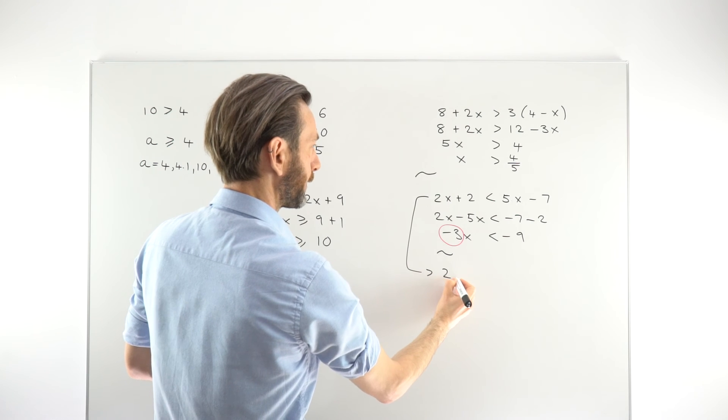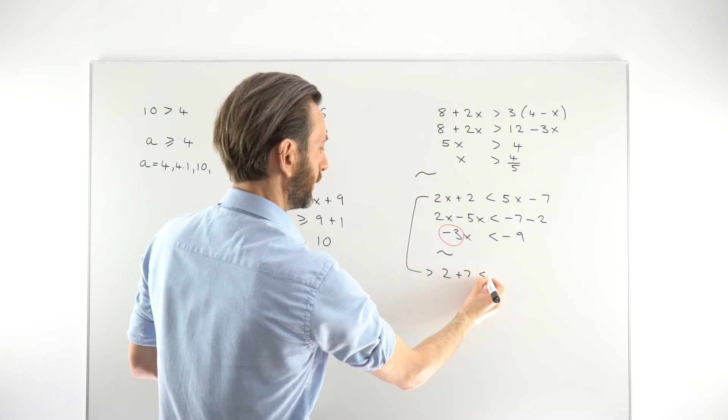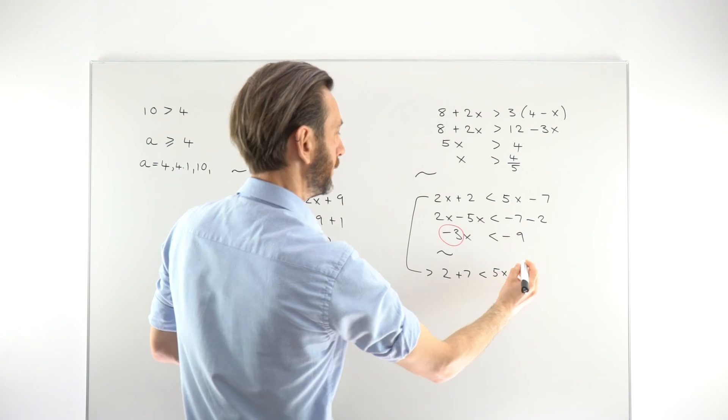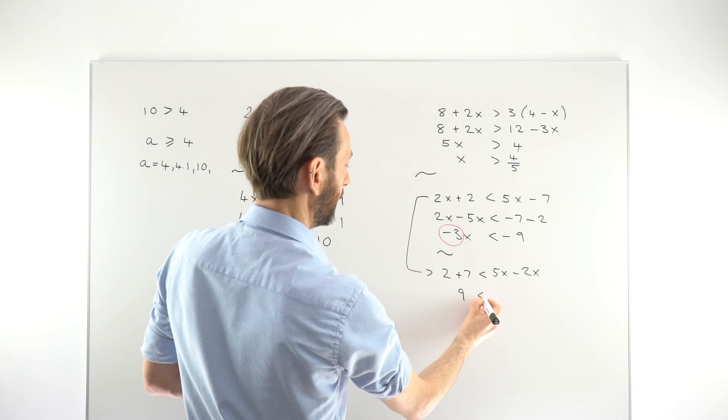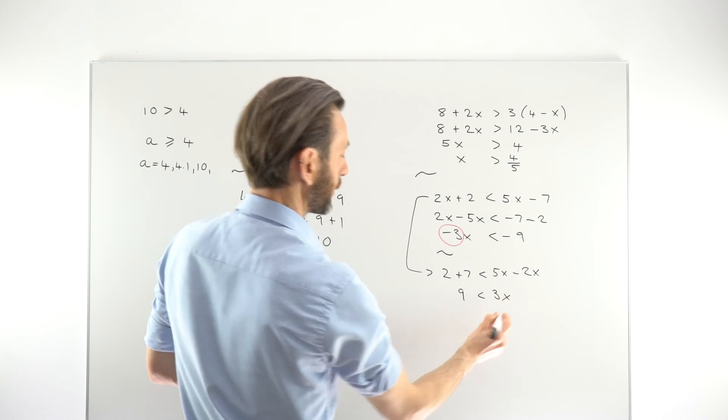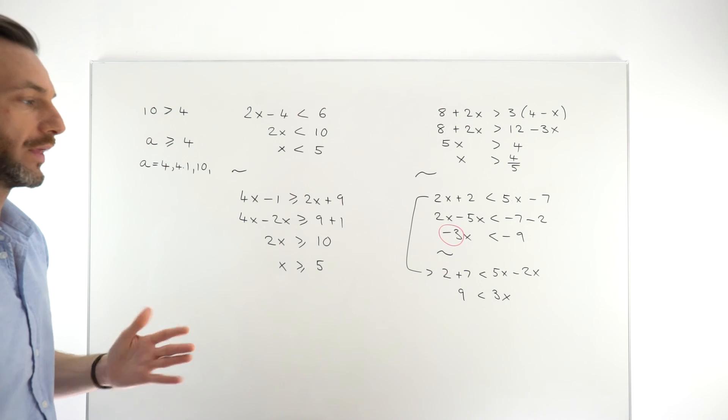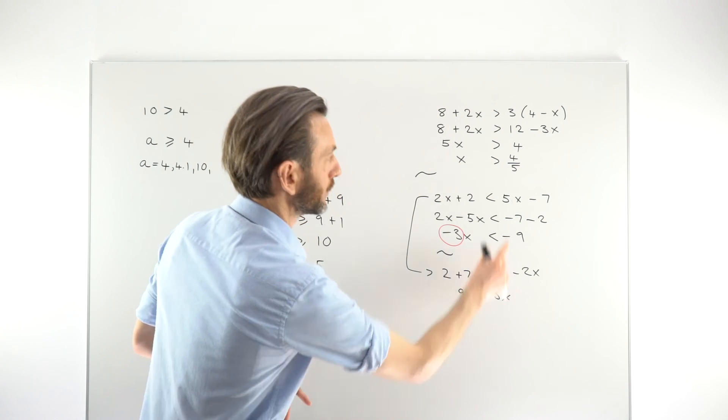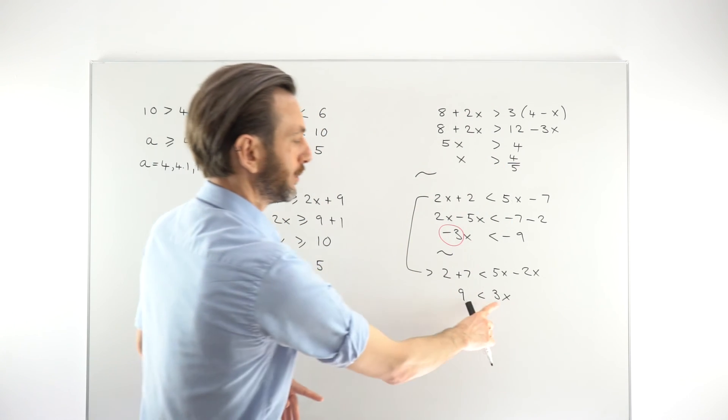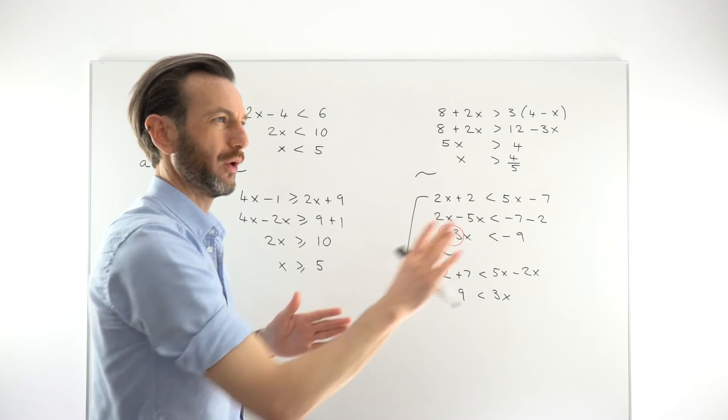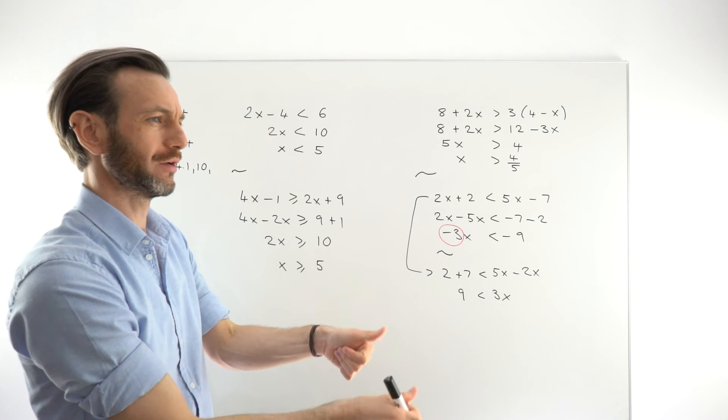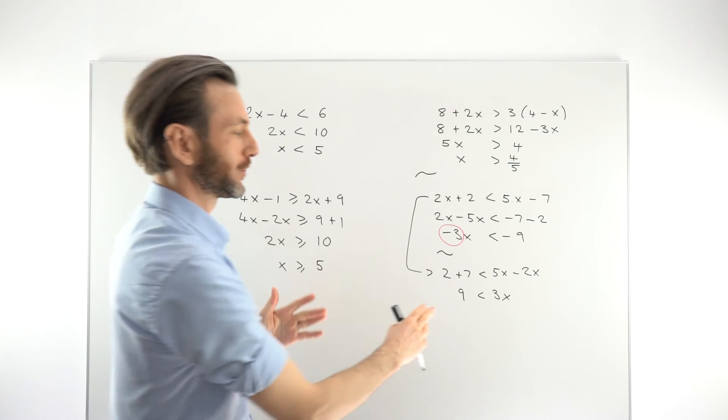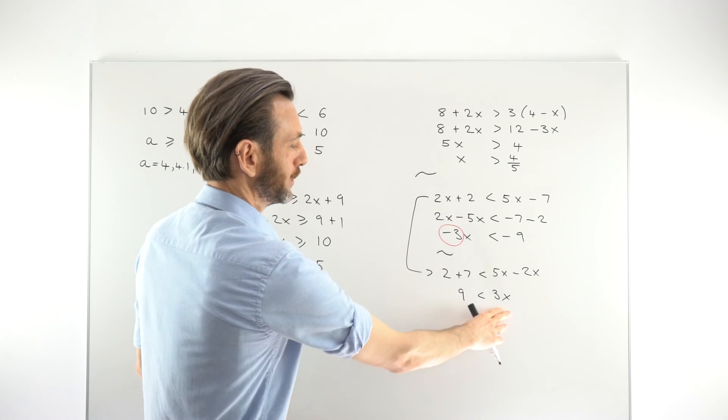Then we would have 2 plus 7 is less than 5x minus 2x. Combining those together, we get a positive 9 and we get a 3x. So we don't have to deal with any negatives. So this is now just like the ones we had before. But we've ended up with the x on the wrong side, because we prefer to usually have the variable on the left-hand side.